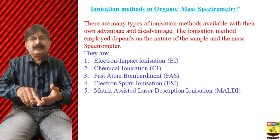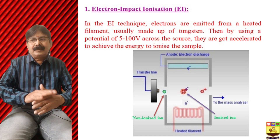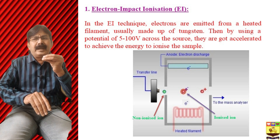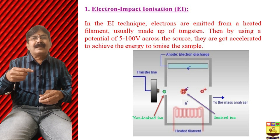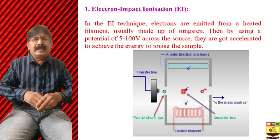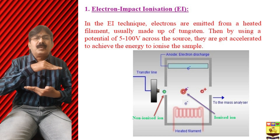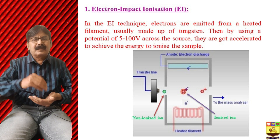Let us look at electron impact ionization. The molecule enters through a transfer line. We have a tungsten filament that produces electrons. We also have an anode and electrodes which produce a high potential in the range of 500 to 100 volts across the source, and the electrons are accelerated to achieve the energy to ionize the sample.